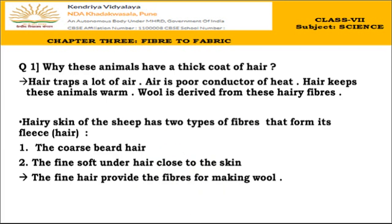Why do some animals have a thick coat of hair? These hairs trap a lot of air between them, and air is a poor conductor of heat. This trapped air prevents body heat from escaping, keeping the animals warm. Wool is derived from these hairy fibers present on their body.